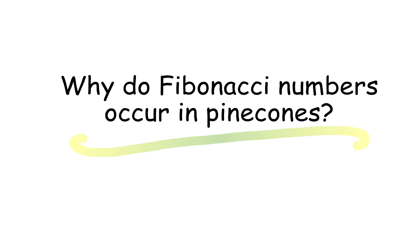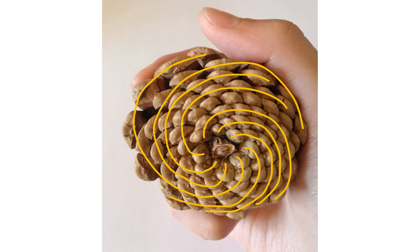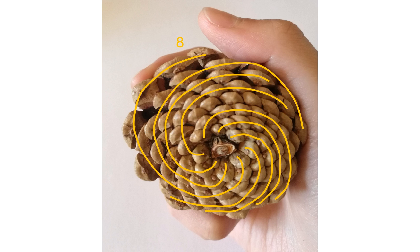Why do Fibonacci numbers occur in pine cones? By Victoria Lee. Have you ever picked up a pine cone and wondered why it looks the way it does? It turns out a pine cone consists of clockwise spirals or counterclockwise spirals, depending on how you look at it. The number of clockwise and counterclockwise spirals are always approximately equal to consecutive Fibonacci numbers, or something similar, such as Lucas numbers.